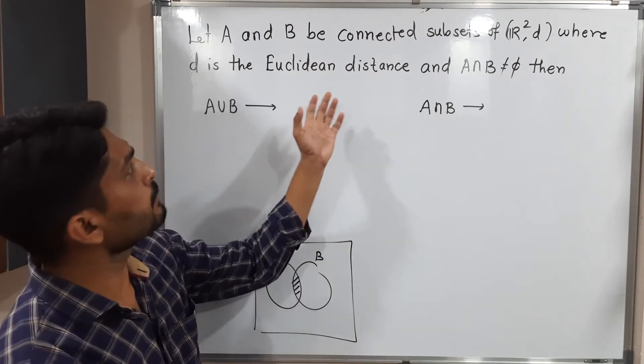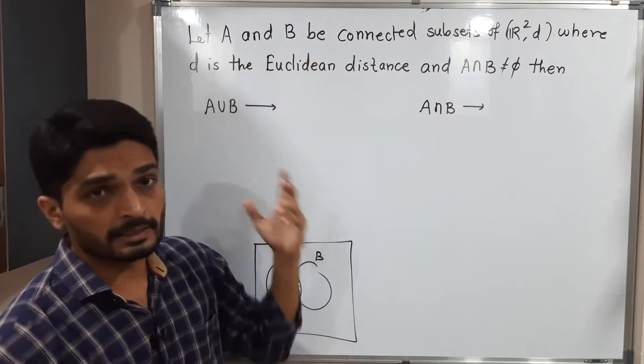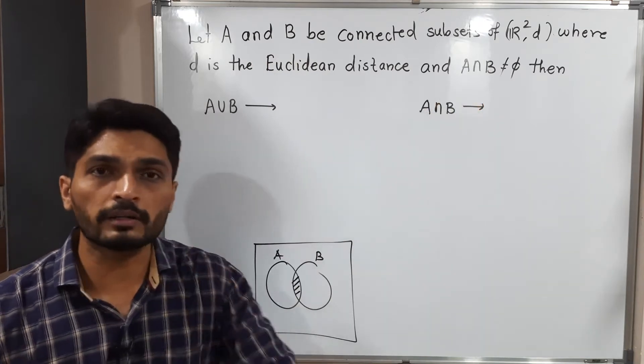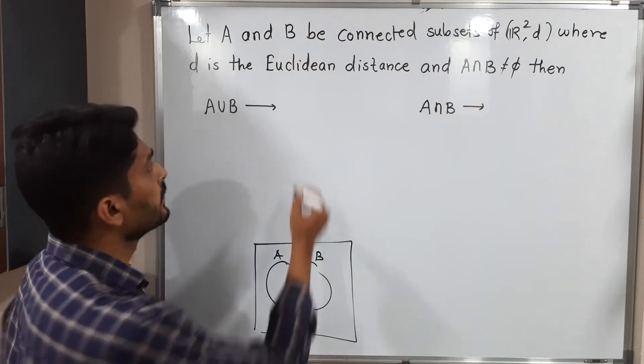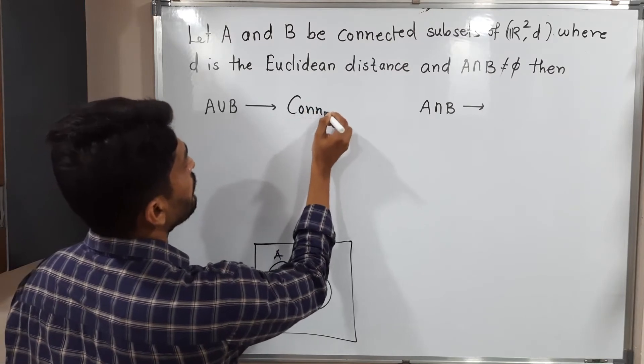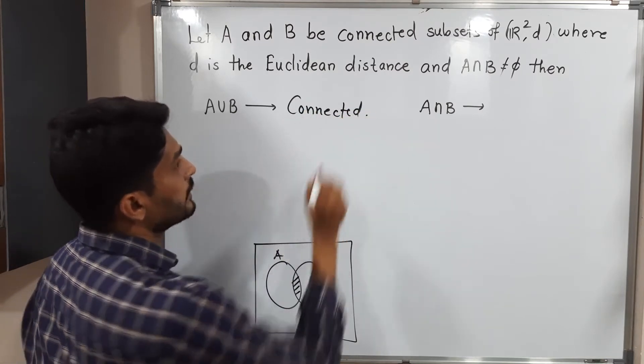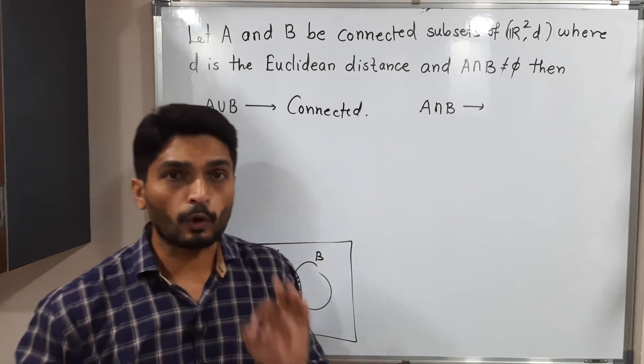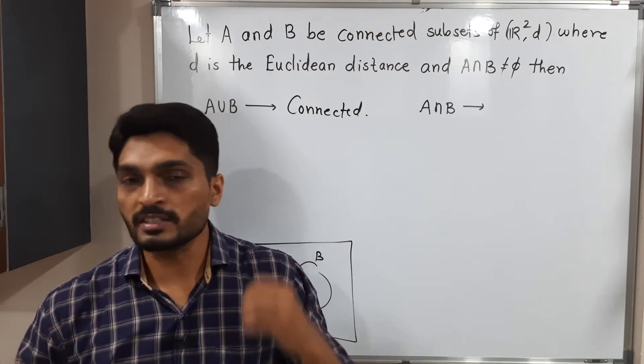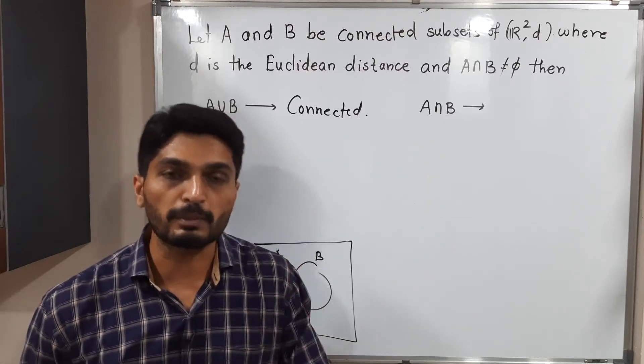So the same information we have. A and B are connected sets, intersection not equal to phi. So their union will be connected. No need to worry about it. It is connected, not only in R² with D. If you consider any metric space, then also it will be connected.